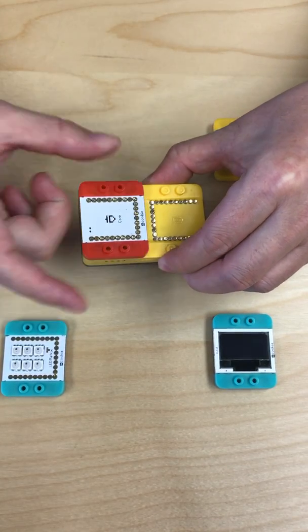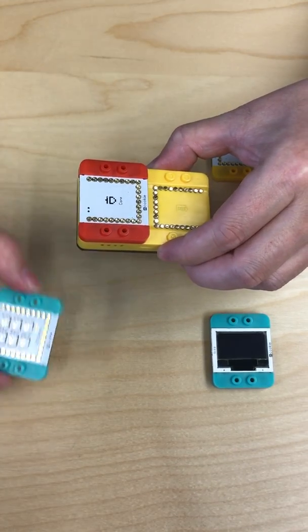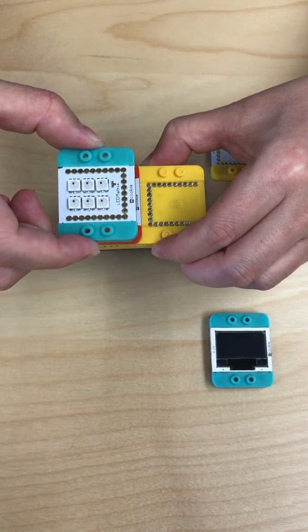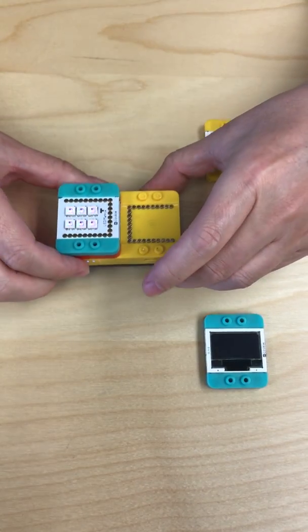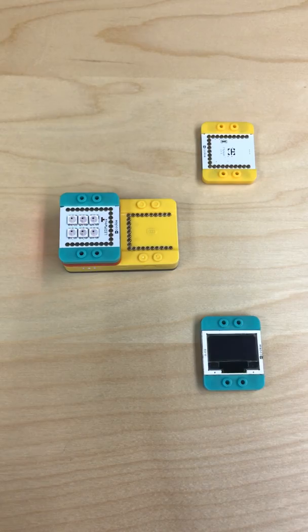Snap it on the battery module magnetically, and also snap on the LED module on top magnetically and turn it on. That's it. The LED lights are colorful.